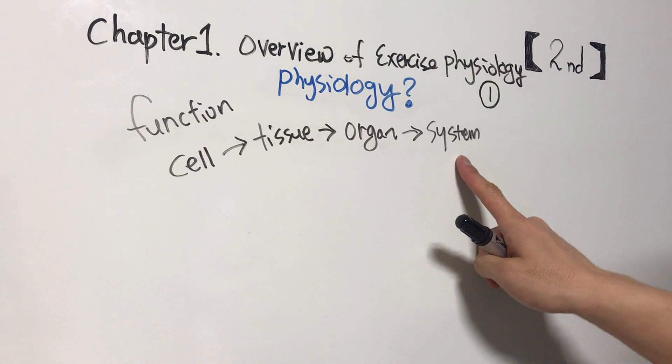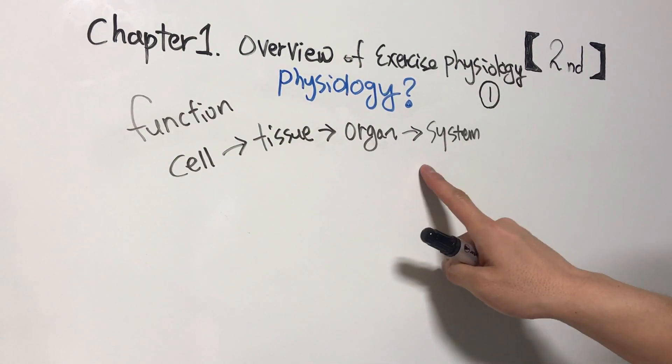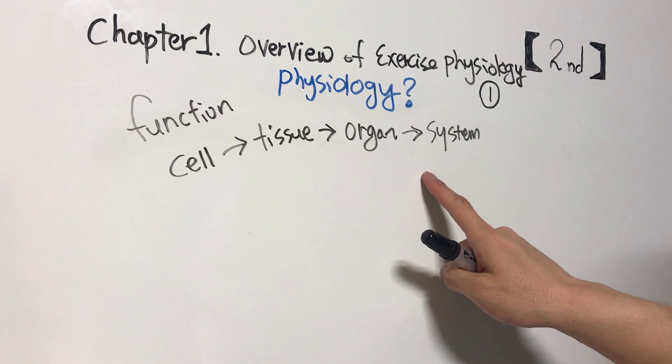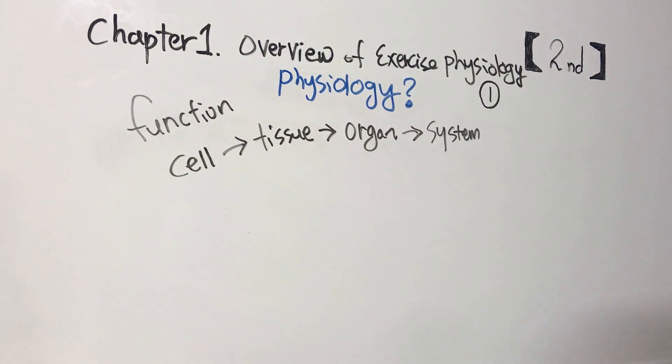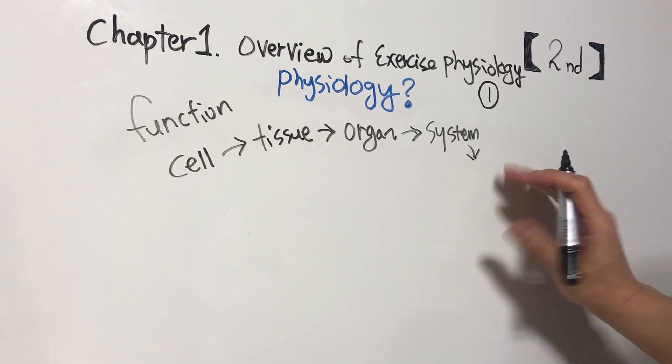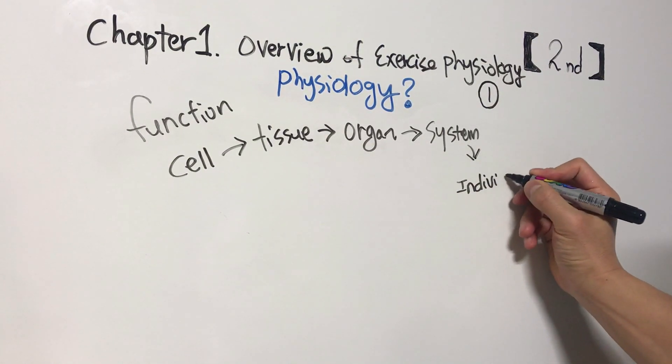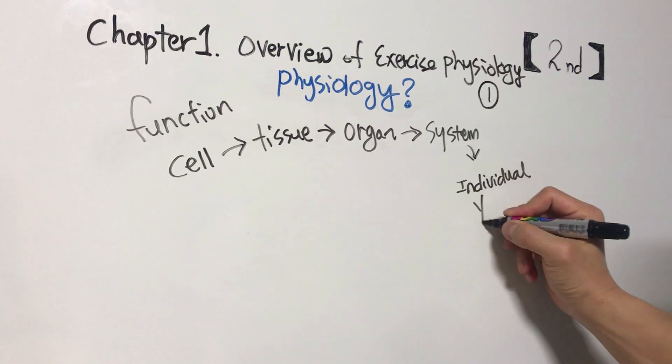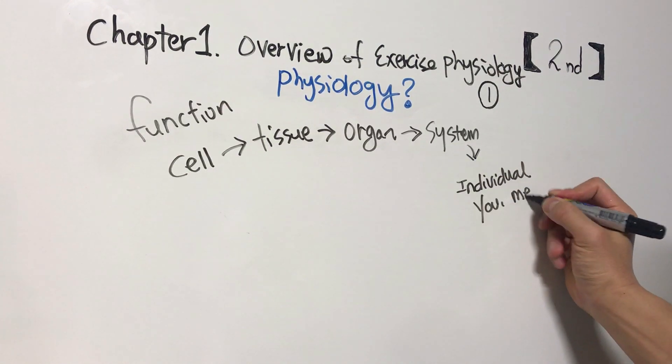And organs gather to form system. We have many systems also - endocrine system, circulatory system, respiratory system, immune system, digestive system, nervous system, muscular system. These systems gather and become individual - you and me.